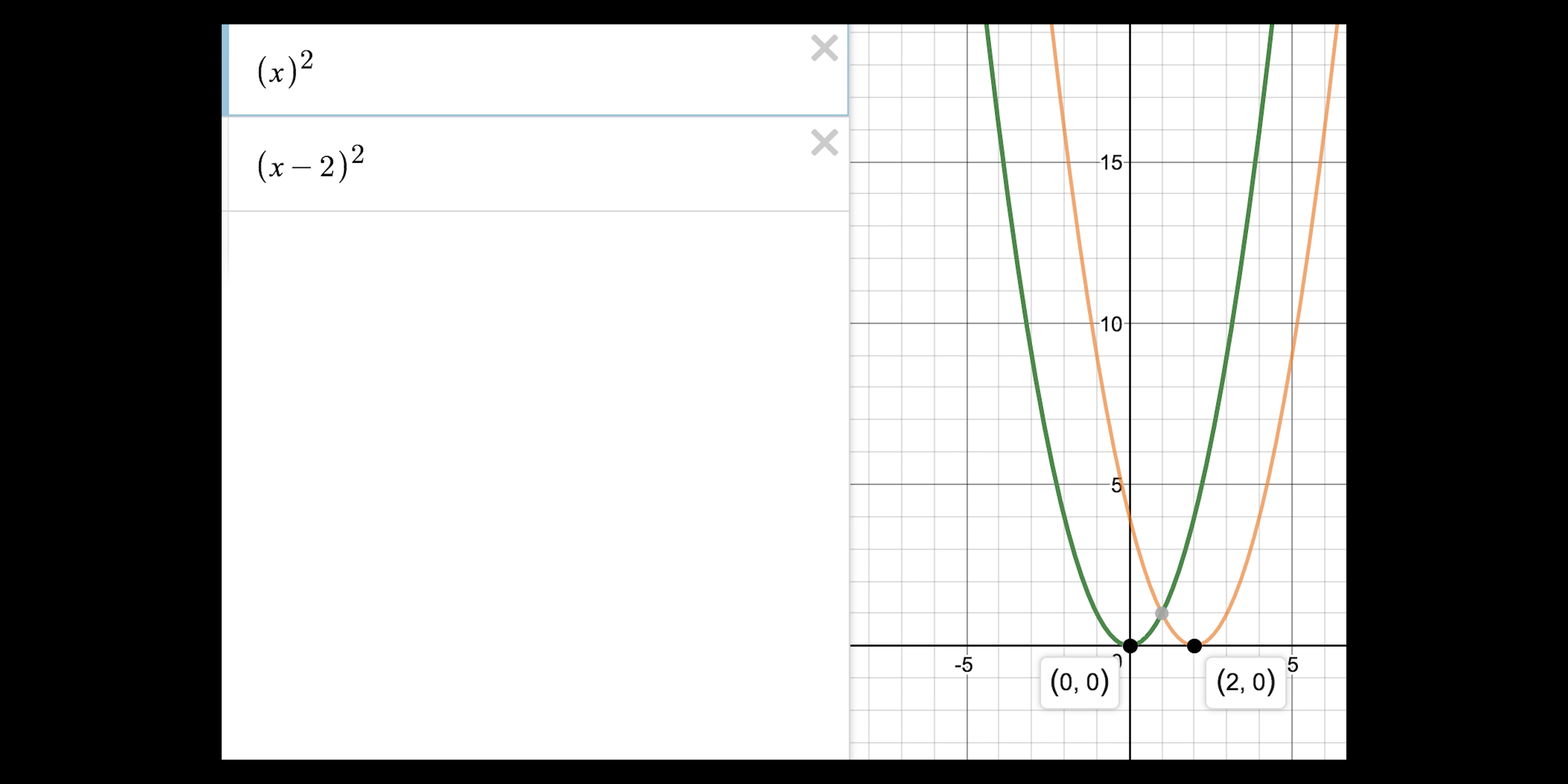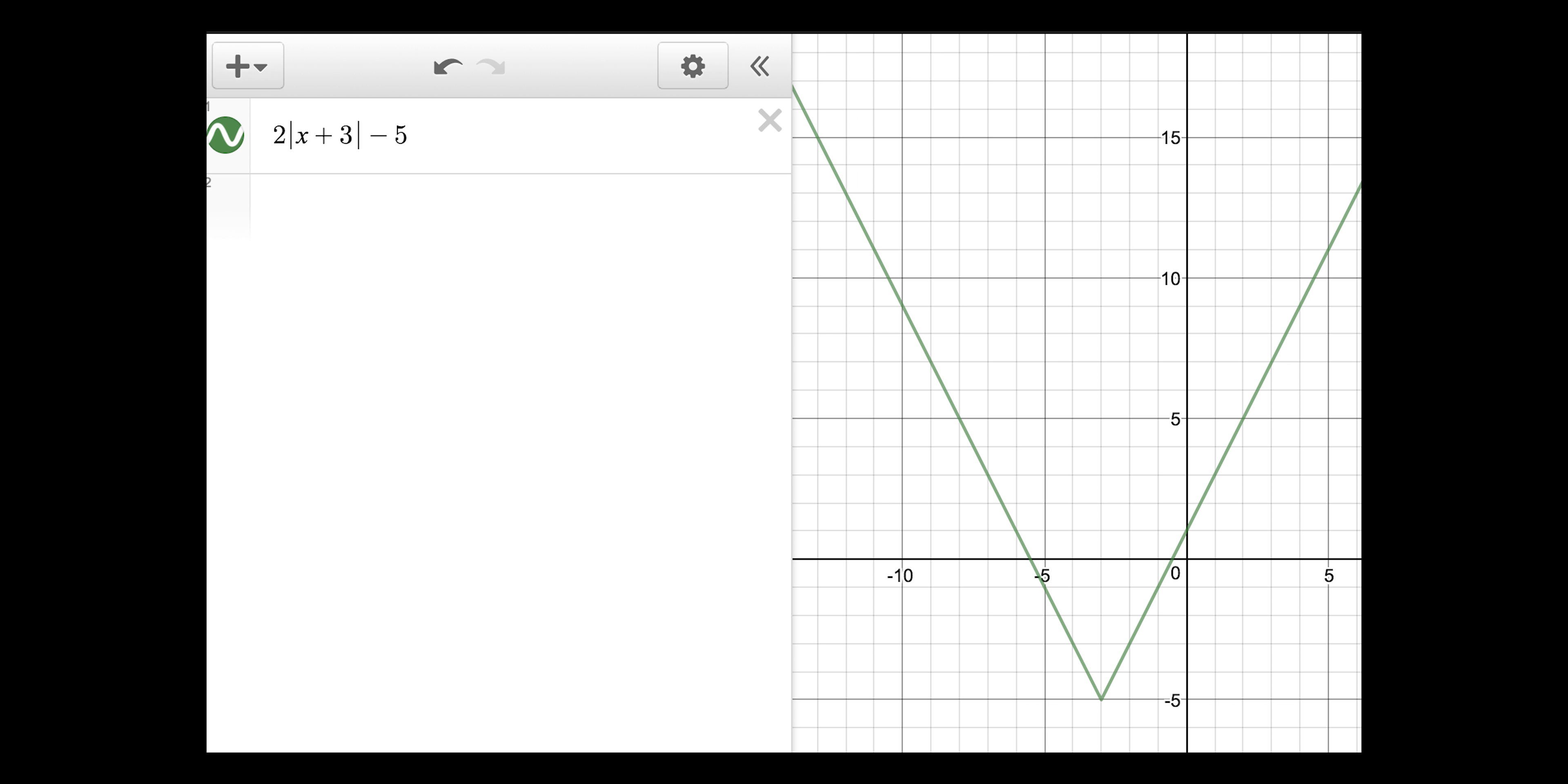c stands for a horizontal movement, going to the left or the right. If c is less than 0, that means it goes to the left. And if c is greater than 0, it goes to the right. So in a graph like 2, absolute value of x plus 3 minus 5, the function is going to the left 3 because you're multiplying a negative by a negative to get a positive.